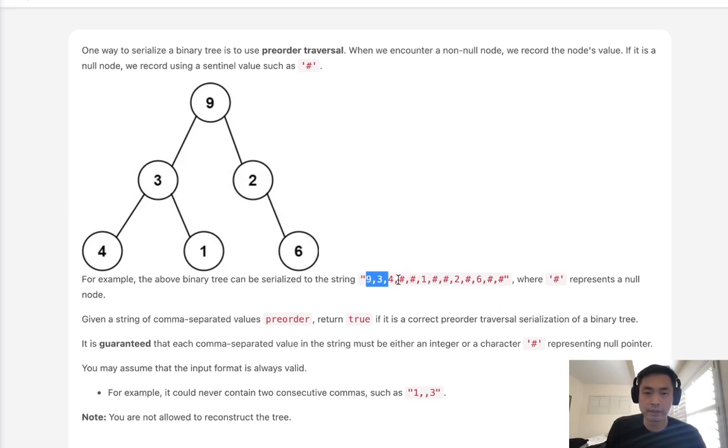And so what we can do then is whenever we find a leaf node here, like four hash hash, we'll pop off these three values, four hash hash.